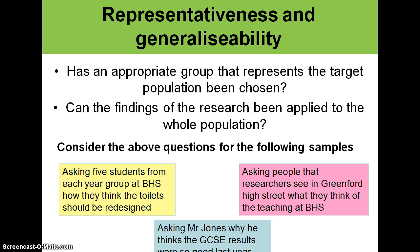We also need to think about whether we can apply what they say to the rest of the population. The first example is asking five students from each year group at Brentside High School how they think the toilet should be redesigned. Taking five students from each year group from the school whose toilets we're trying to redesign is probably quite a good representation of that particular population at Brentside. We could apply those people's opinions to the rest of the population at Brentside.